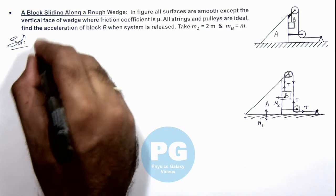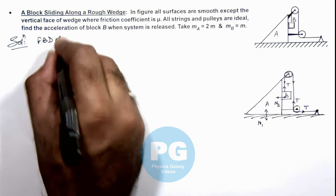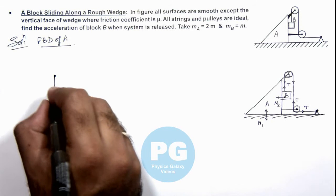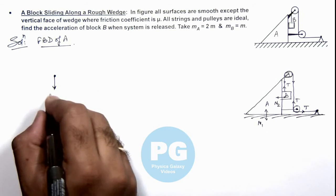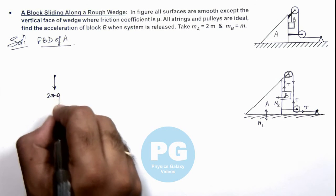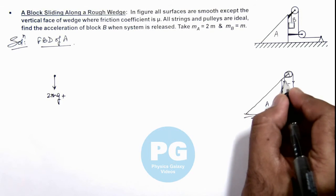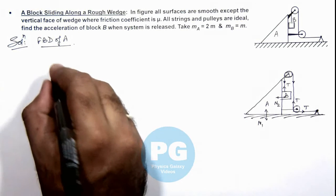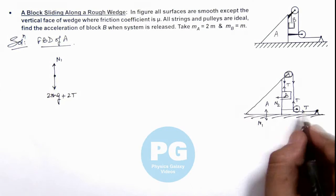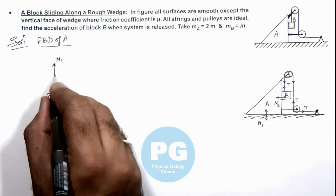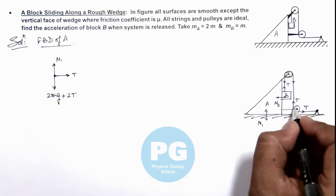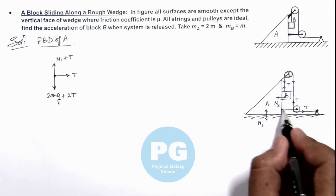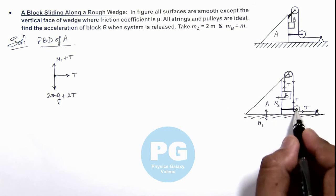So if we draw the free body diagram of A, here you can see the downward forces acting on it: its weight, that is 2mg, plus these two tensions, 2T. And the normal reaction in upward direction which is N₁, and one tension is in this direction which is T. And one tension which is acting on this pulley in upward direction will also be taken in FBD of the block because this pulley is rigidly clamped with the block.